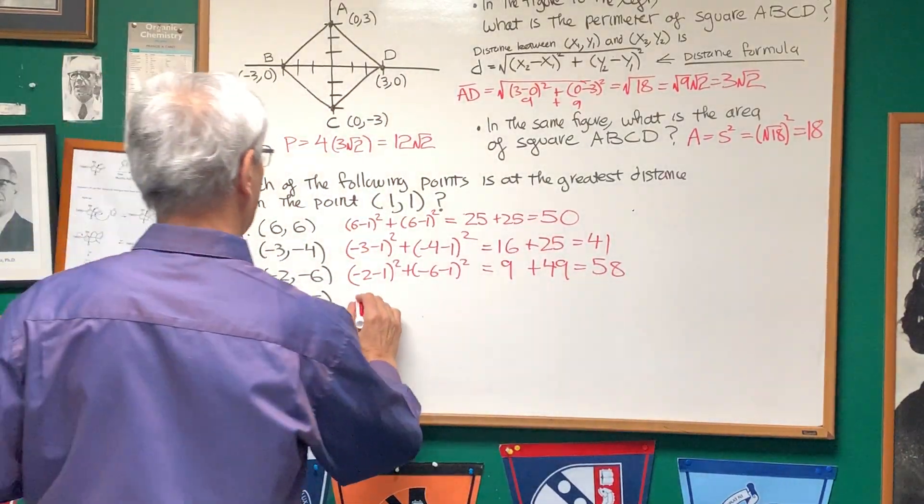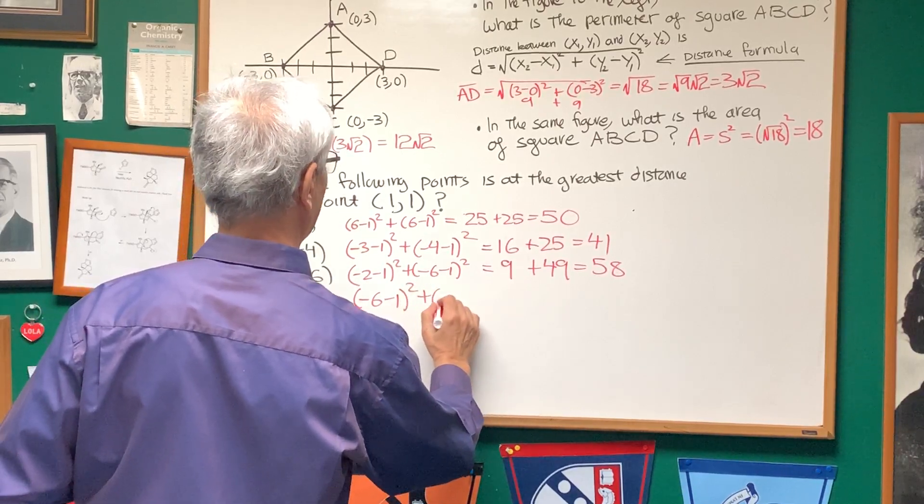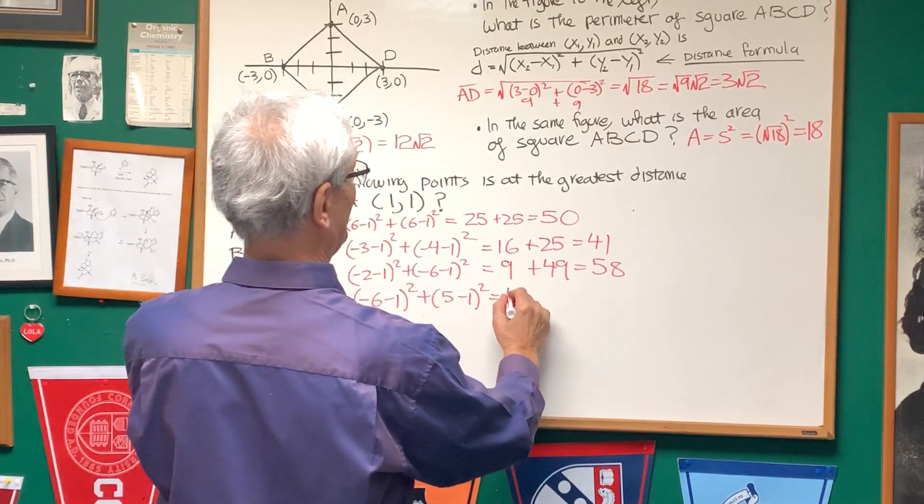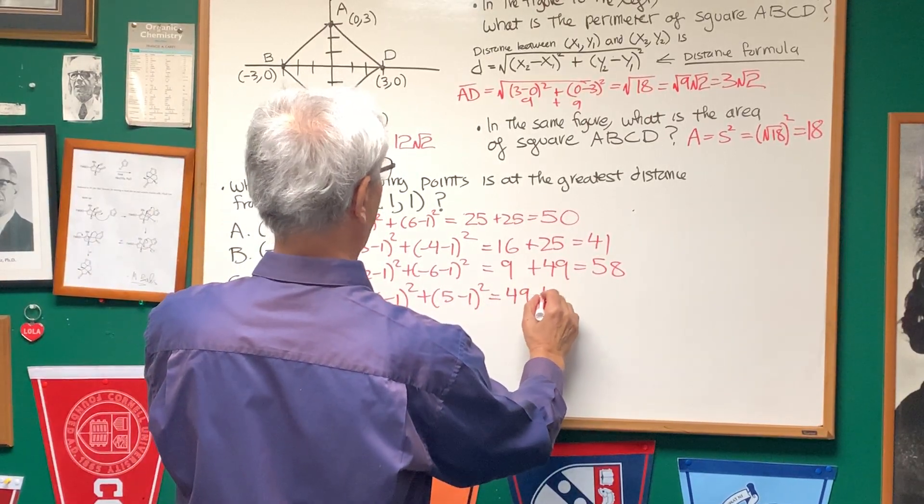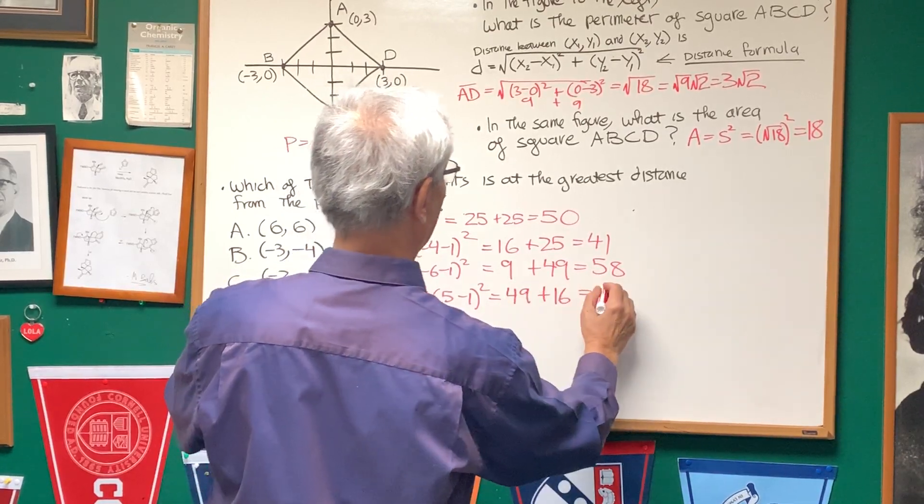We're almost done. And this was negative 6 minus 1 squared plus 5 minus 1 squared. That gives us negative 7 squared is 49, and 5 minus 1 squared is 16, and that gives us 65.